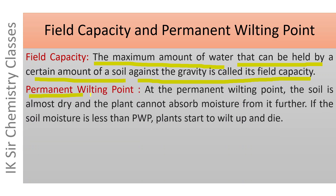Permanent wilting point: at the permanent wilting point, the soil is almost dry and the plant cannot absorb moisture from it further. If the soil moisture is less than the permanent wilting point, plants start to wilt, that is, start to die.